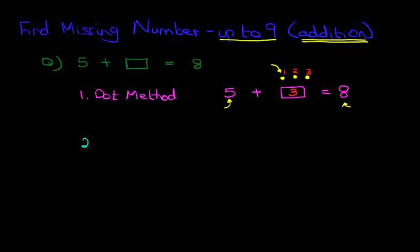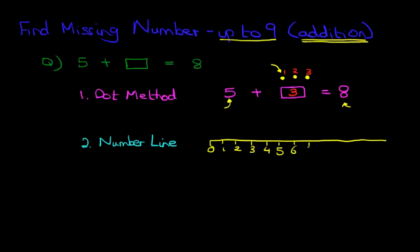Now we're going to use our second method which is the number line. As you know, a number line is simply a line with numbers. Let's draw it over here. And ours is going to start from 0, 1, 2, 3, 4, 5, 6, 7, 8, 9, and 10. So our number line, and let's write this down. This is our number line and it goes from 0 to 10.